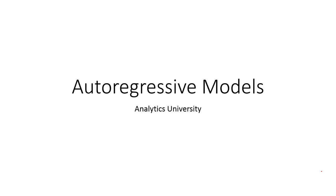In this video I will be talking about what is known as the autoregressive time series model. In the previous video we learnt about the moving average models. The autoregressive models are a different kind of models, similar to the moving average models, which can be used for time series forecasting. This video is purely on the theory of autoregressive models — in short we call it the AR model. In a separate video we will talk about how to use the AR model to actually forecast your data.